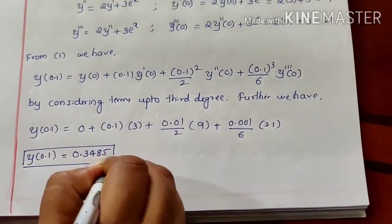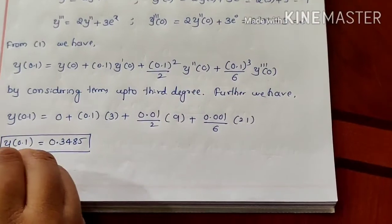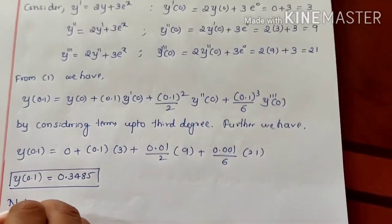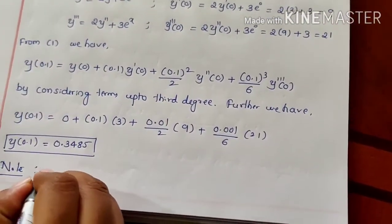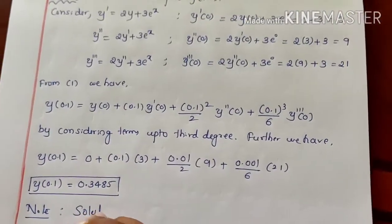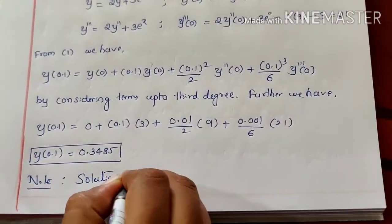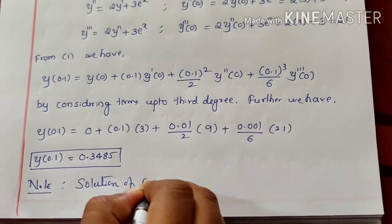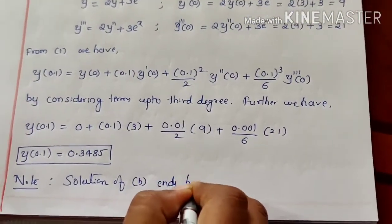Thus y(0.1) is 0.3485. In part B, they asked to compute y(0.1), so that solution ends here.